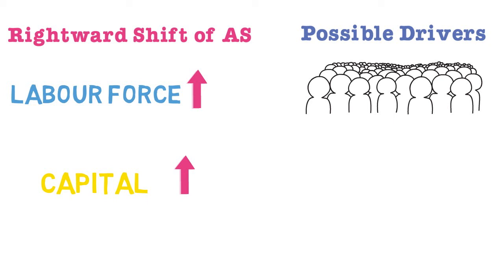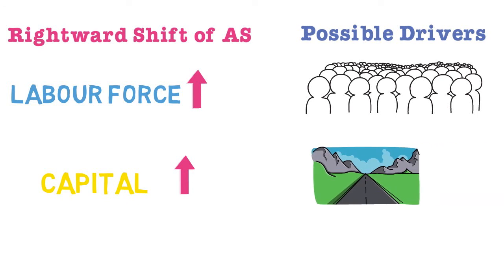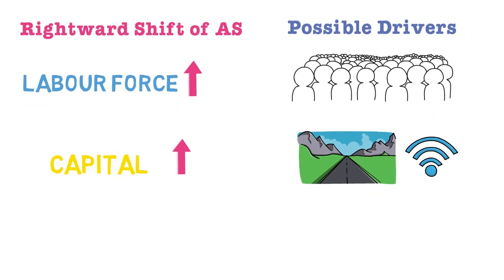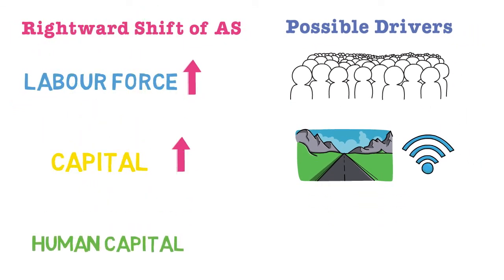We also have capital — physical capital — and when this increases, the aggregate supply curve, be it short or long run, increases as well. This could be due to investment in infrastructure, for example investment in an up-to-date and efficient road network with motorways, or investment in a high-quality and advanced broadband network. That should increase the aggregate supply of the economy and shift the AS curve to the right.